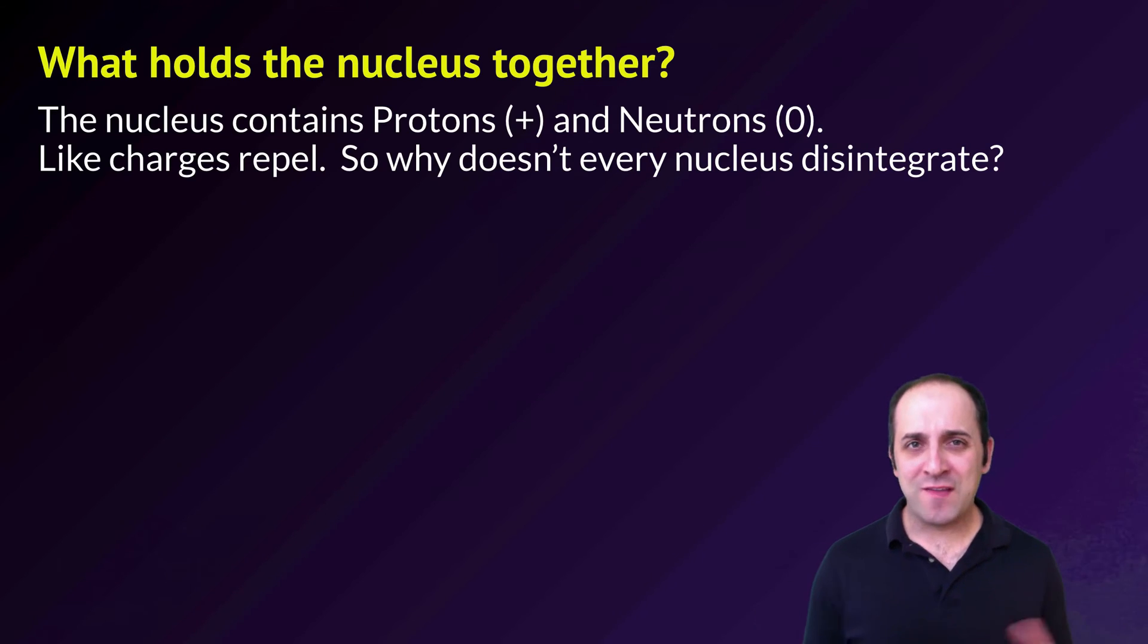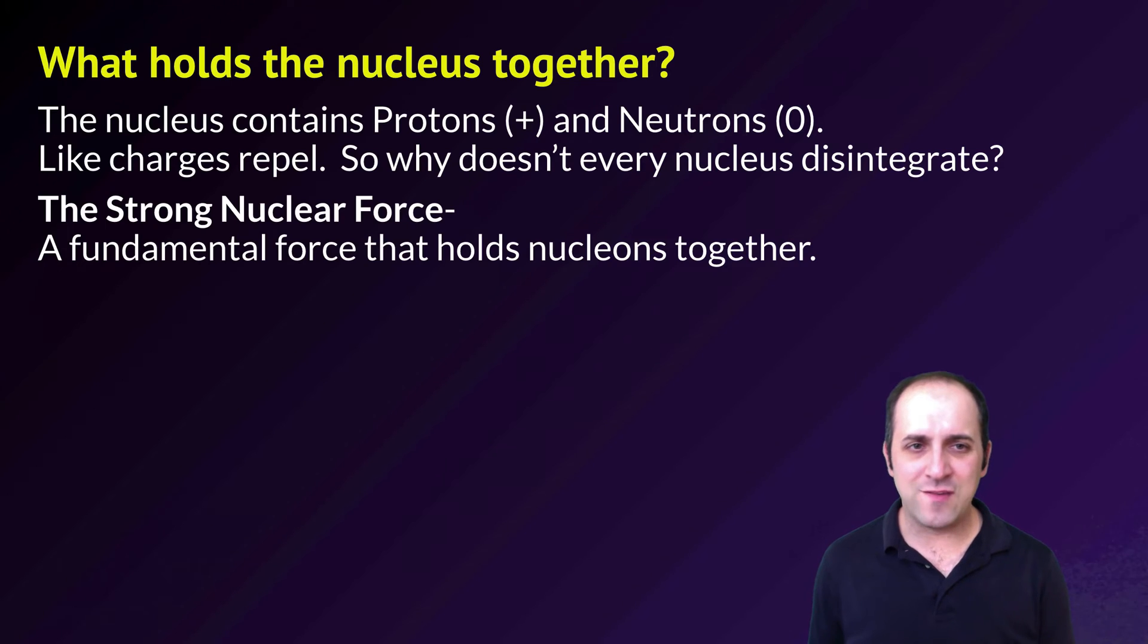If you think about the nucleus it's kind of a weird situation because there's protons in there and there's neutrons in there and the neutrons don't have any charge, but the protons have a positive charge. And if you remember back from what you learned when you learned about electrical charges, probably one of the first things that you learned was that like charges repel. And so why isn't that happening in the nucleus? Why aren't the protons all repelling from each other to the point where the nucleus just disintegrates?